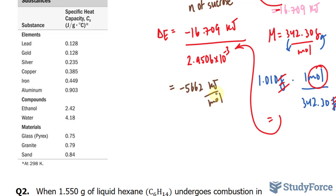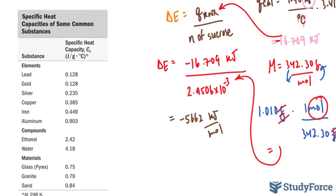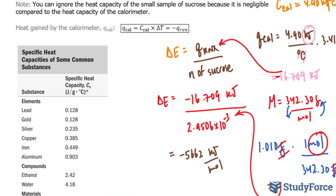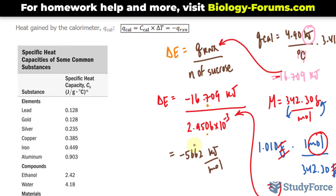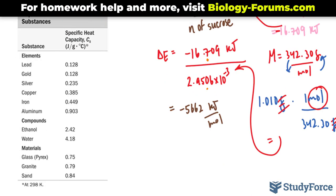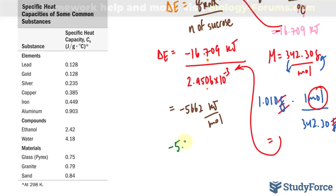We need to write this using the correct number of significant figures. And we weren't keeping track, but this number should have had 3 significant figures. And this number should have had 4. So our final answer should have 3. And in that case, we need to use scientific notation. We'll write down negative 5.66 times 10 to the power of 3 kilojoules per mole.